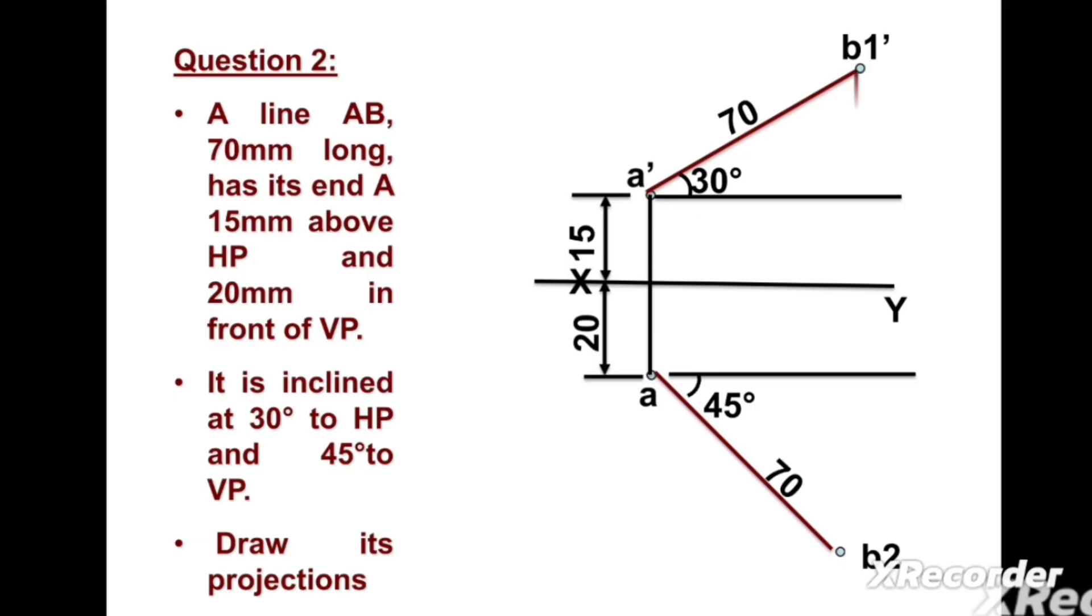Now we can draw a vertical line passing from b1' and a horizontal line passing from point a. We will get the intersecting point b1 here. Now we can draw a horizontal line passing from b2 having any length in this direction.